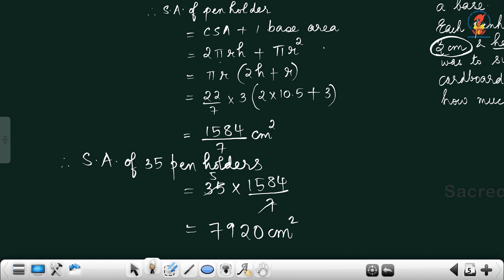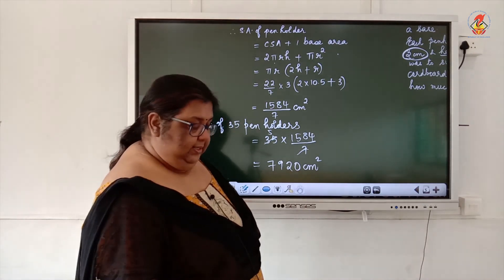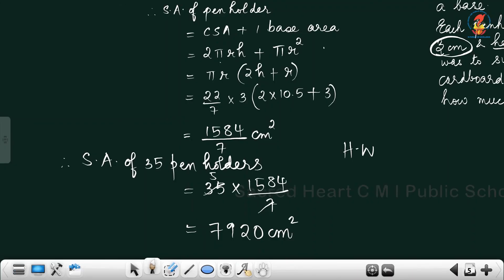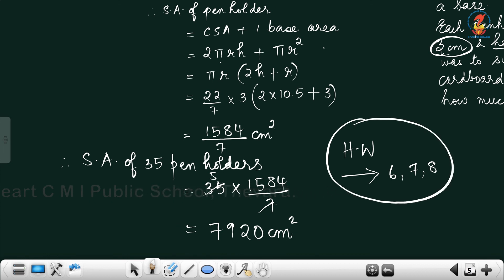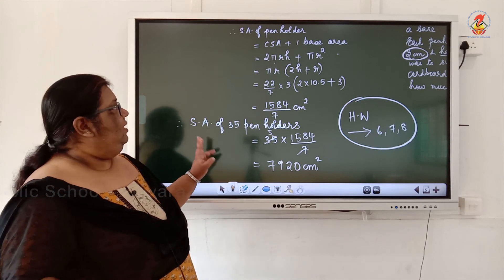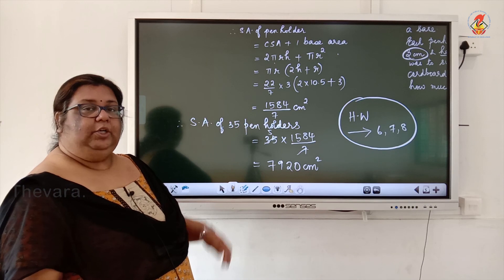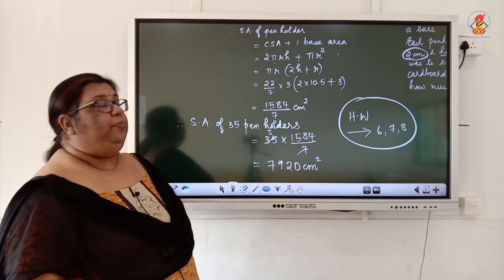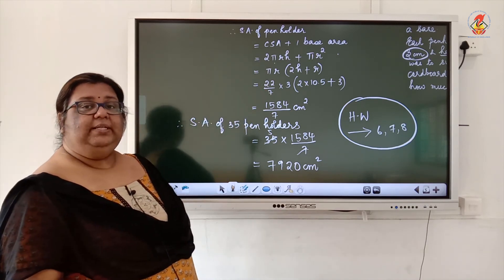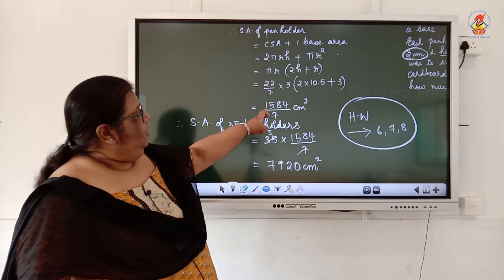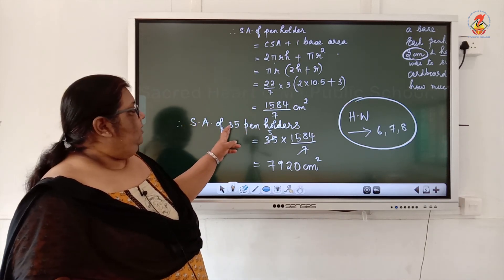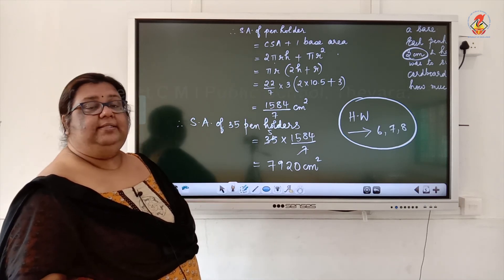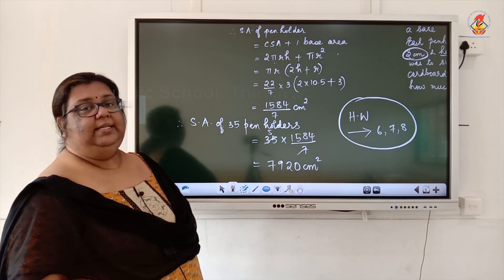So 7920 centimeter square of cardboard is required for making 35 pen holders. Questions 6, 7, and 8 of this exercise are homework. The pen holder is cylindrical with an open top. Surface area = CSA + 1 base area = 1584/7 per pen holder. For 35 pen holders: 35 × (1584/7) = 7920 centimeter square. Thank you.